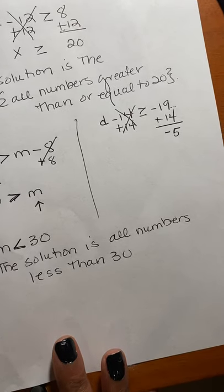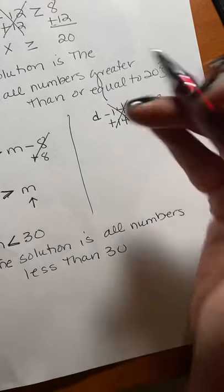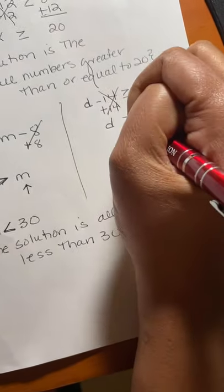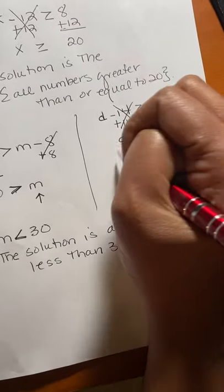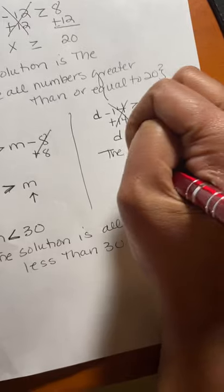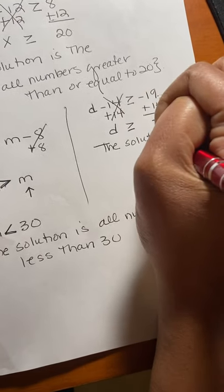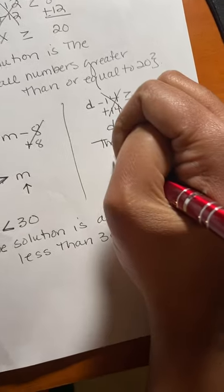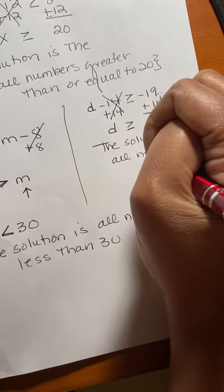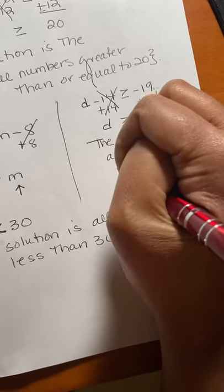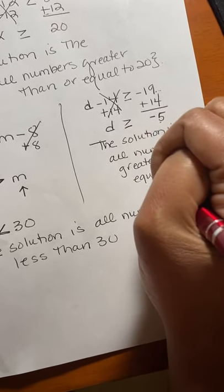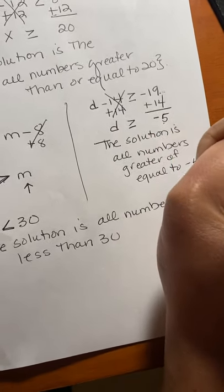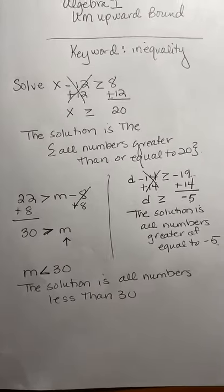And we're going to bring down the negative because 19, the absolute value of 19 will be larger than 14. Bring down my variable D and D greater than or equal to sign. So this answer will be the solution is all numbers greater than or equal to negative 5.